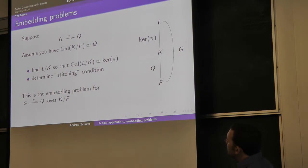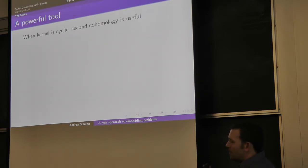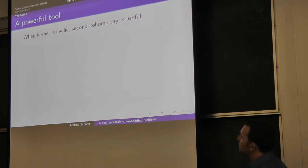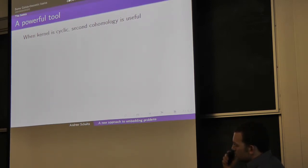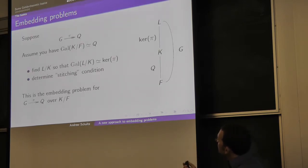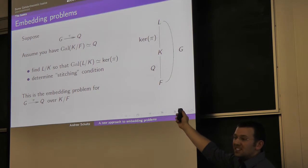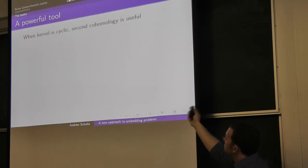This is called the embedding problem for the surjection over the extension K over F. This is how you do inverse Galois theory inductively: assume you have a nice quotient and keep lifting up the ladder.